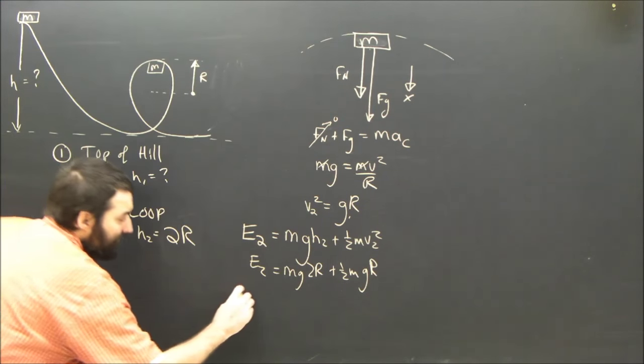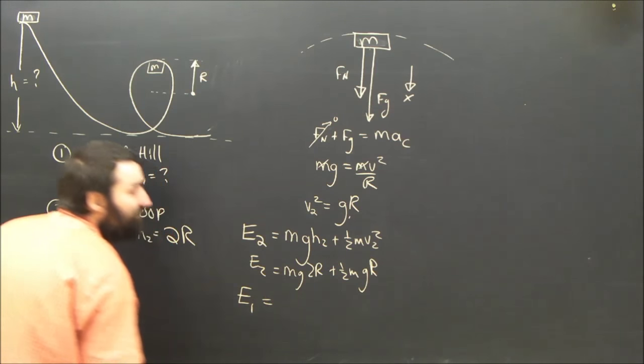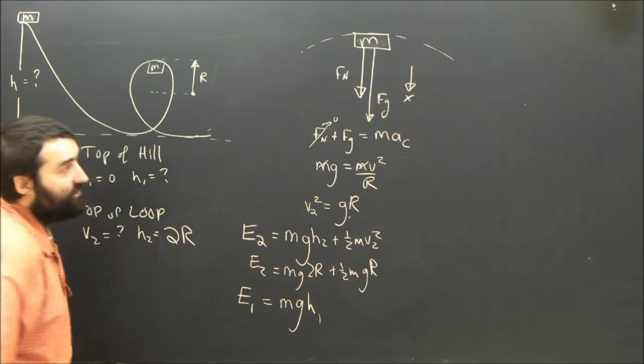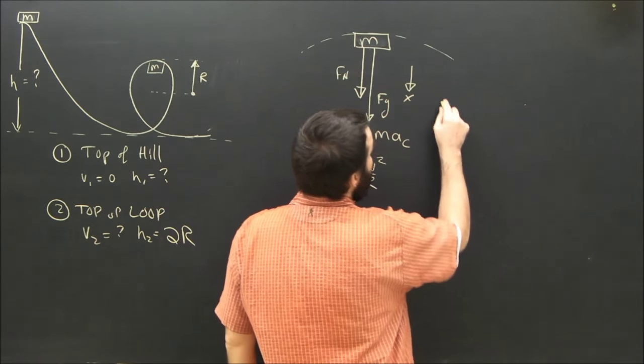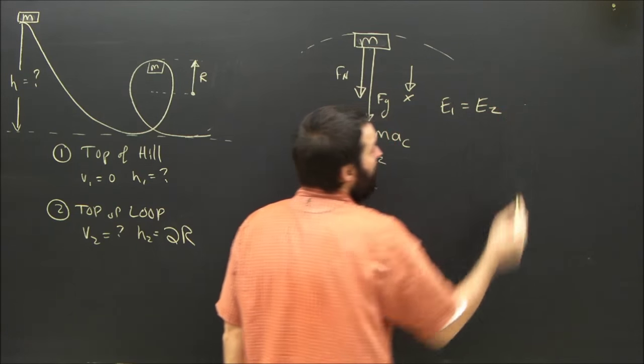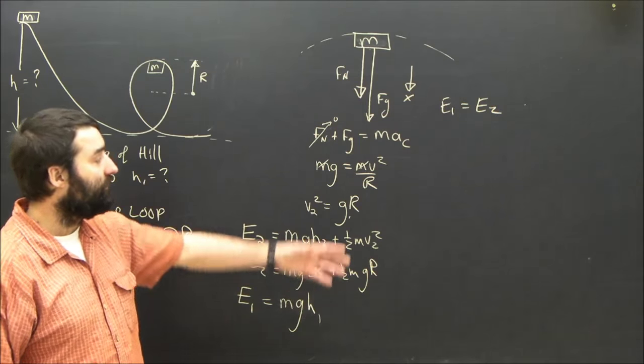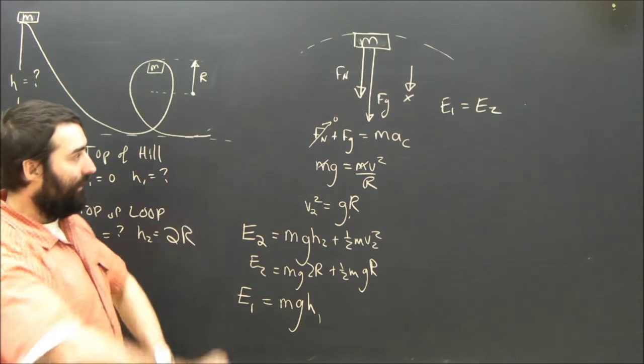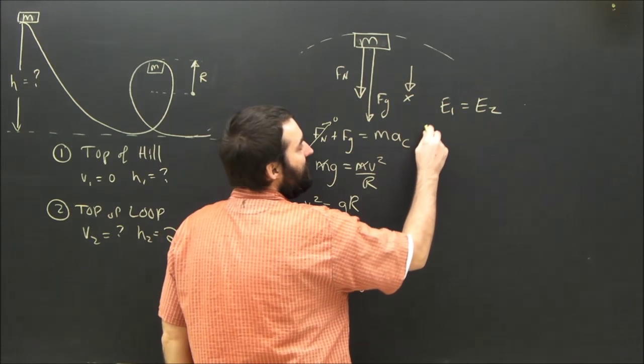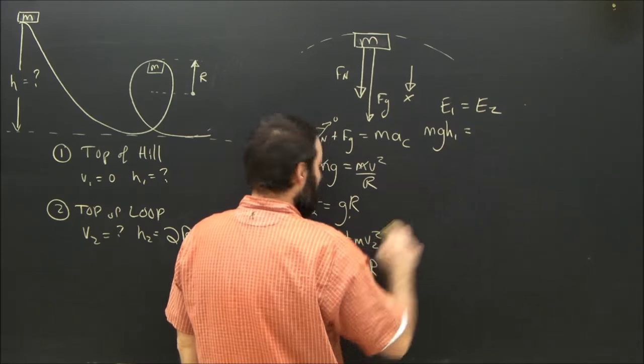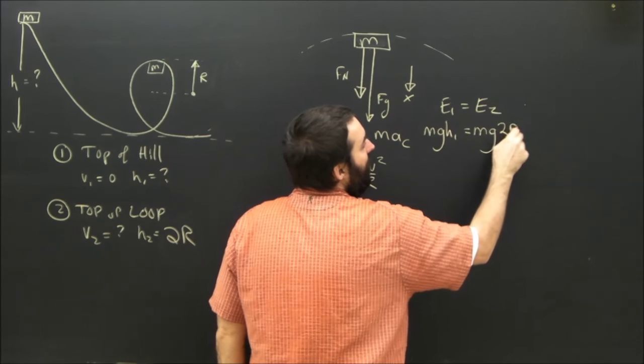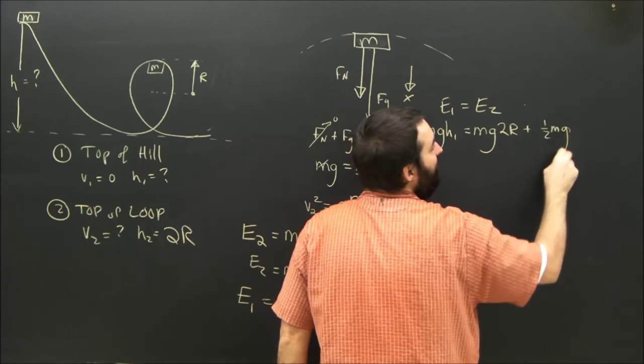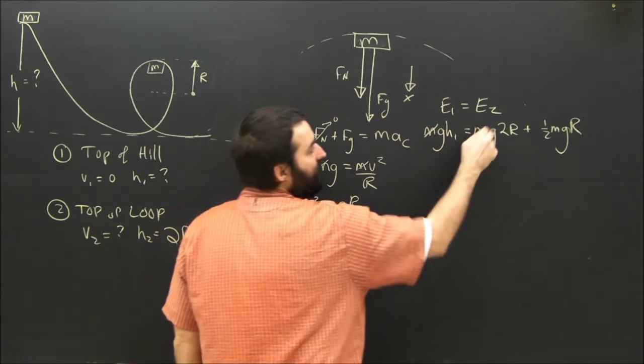What's the energy at the initial spot, at the top of the initial hill? Well, that's energy 1. That's just the potential energy, because it's not moving—all its energy must come from potential. So that's just mgh1. The law of conservation of energy tells me that the energy at spot 1 must equal the energy at spot 2. We've got no friction, there's no non-conservative forces, nothing sucking energy out of the system. If it loses a certain amount of potential energy, it must gain the same amount of kinetic energy. So, subbing these in, we can see that mgh1 must equal mg2r plus a half mgr.